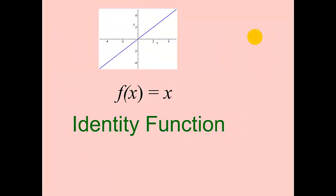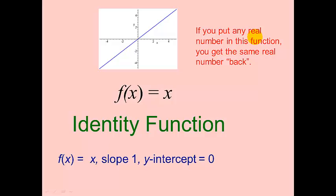The identity function is a special linear function where f(x) = x, so a linear function when the slope is one and the y-intercept is zero. We call it the identity function because if you put any real number in, you get the same real number back. The domain is all real numbers, the range is also all real numbers, the zero is just where x equals zero, and the end behavior: as x approaches infinity we go to infinity, and as x approaches negative infinity we approach negative infinity.